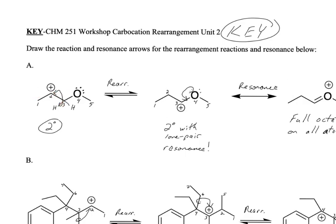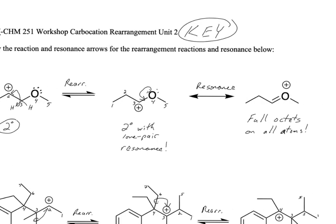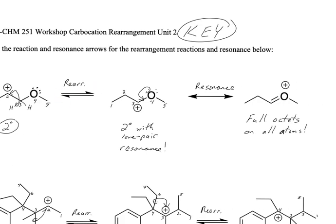If I move this H and I move electrons - I don't move the charge, I move electrons - electrons in the atoms attached to them, that gives me a secondary carbocation with lone pair resonance. So that's really good. With lone pair resonance. This is a resonance arrow to draw the resonance, and this is really stable because not everything has a full octet.